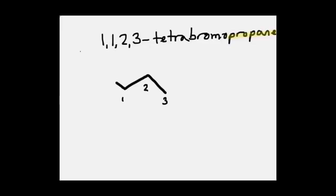There are four bromines on this structure. Two of them are bonded to carbon 1. The third one is at carbon 2, and the fourth is at carbon 3. No other substituents according to the name, so this should be my structure.